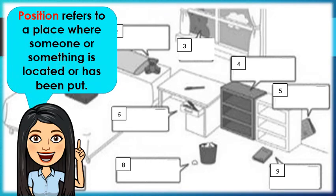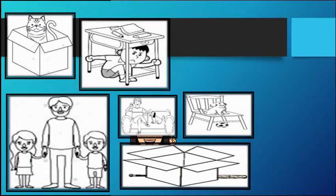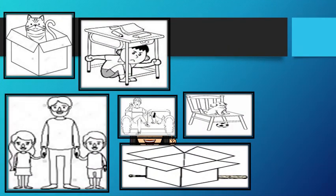When we say position, it refers to a place where someone or something is located or has been put. There are words that we use in describing the position of an object.